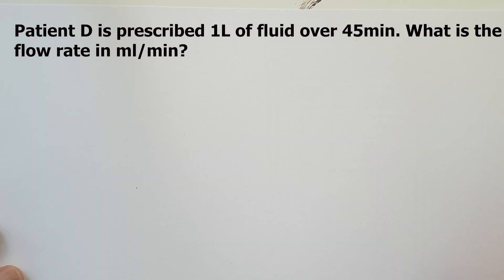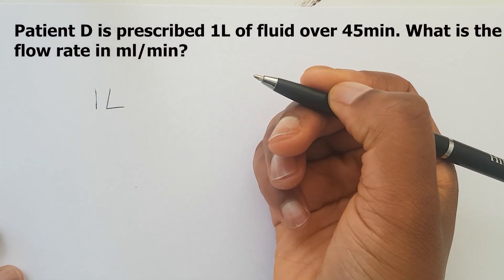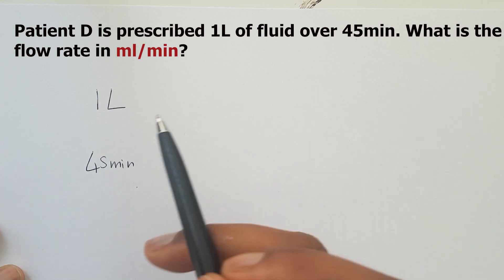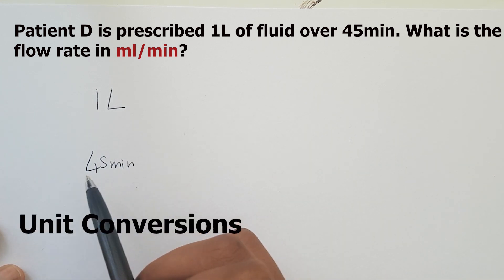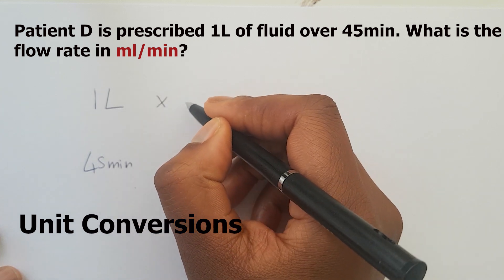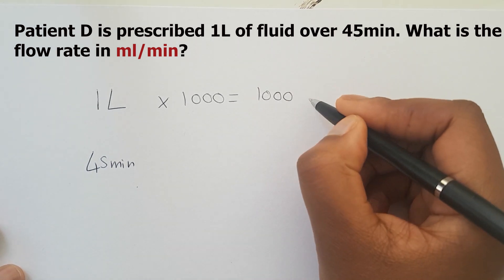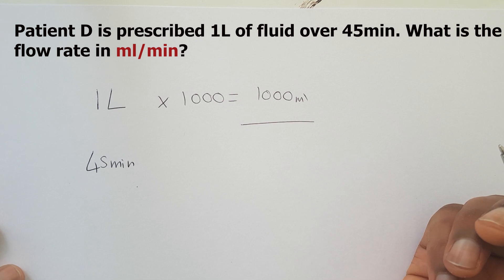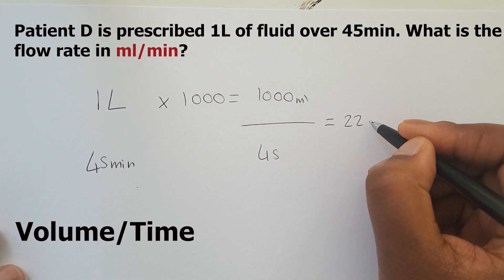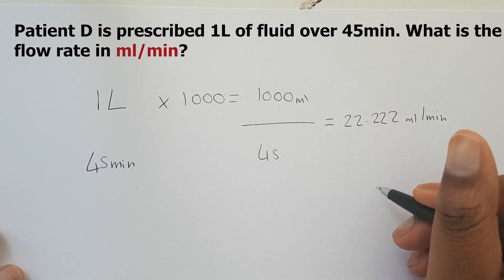Patient D is prescribed one litre of fluid over 45 minutes. What is the flow rate in mils per minute? We have one litre over 45 minutes. We're already in minutes for the time, so no time conversion needed. For the volume, we're in litres and need to convert to millilitres, so we multiply by 1,000, giving us 1,000 mils. Flow rate is volume divided by time: 1,000 ÷ 45 = 22.222 recurring mils per minute, which rounds to approximately 22 mils per minute.